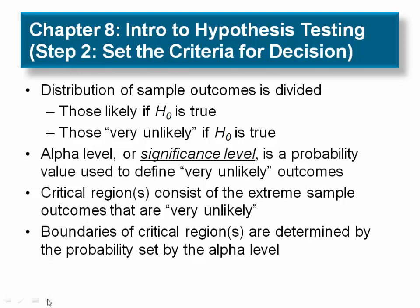Technically, the critical region is defined by sample outcomes that are very unlikely to occur if the treatment has no effect. That is, if the null hypothesis is true. Reversing the point of view, we can also define the critical region as sample values that provide convincing evidence that the treatment really does have an effect.